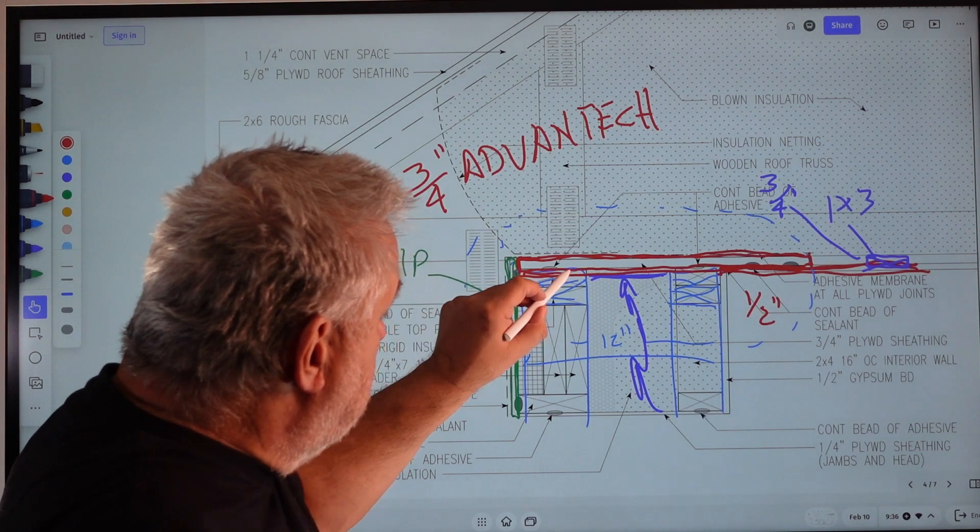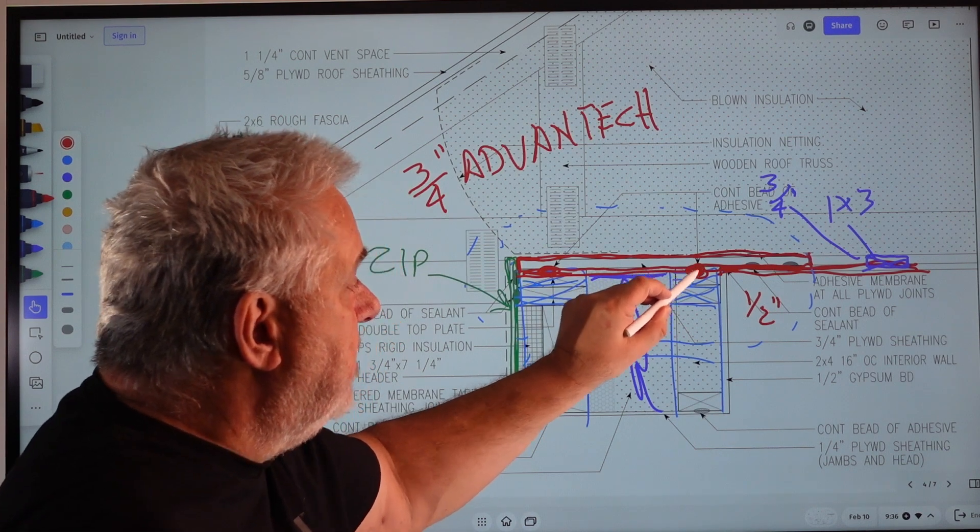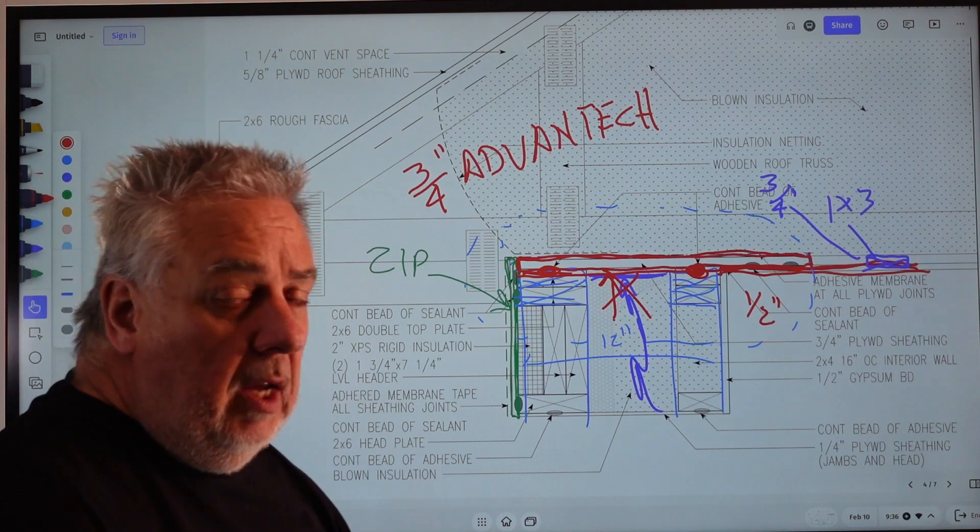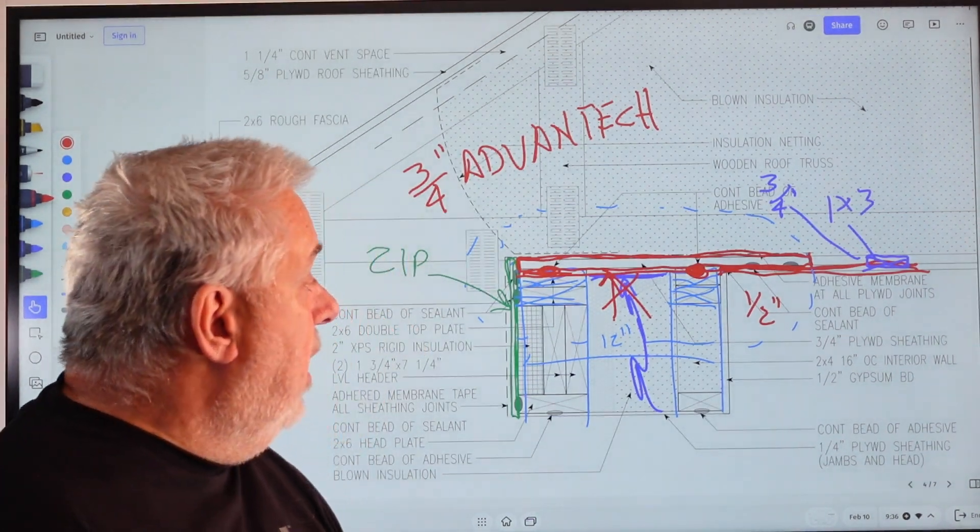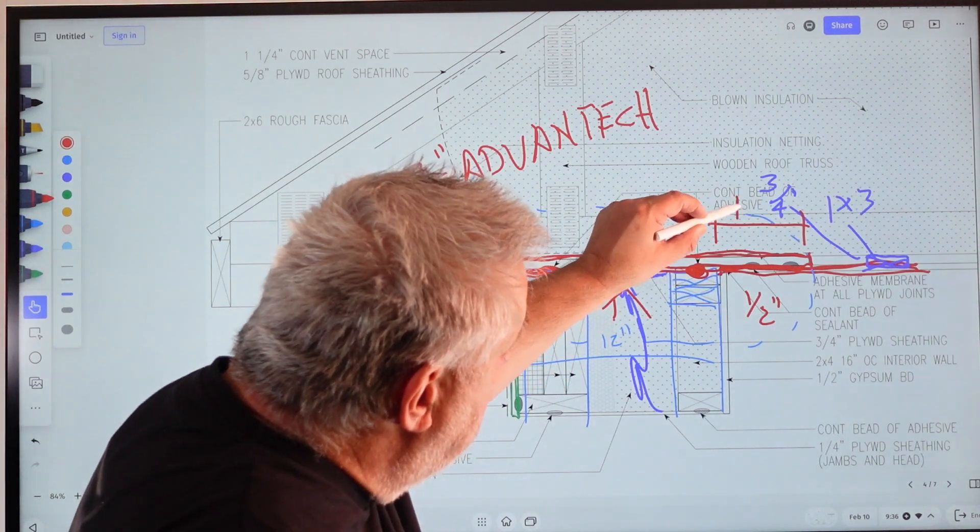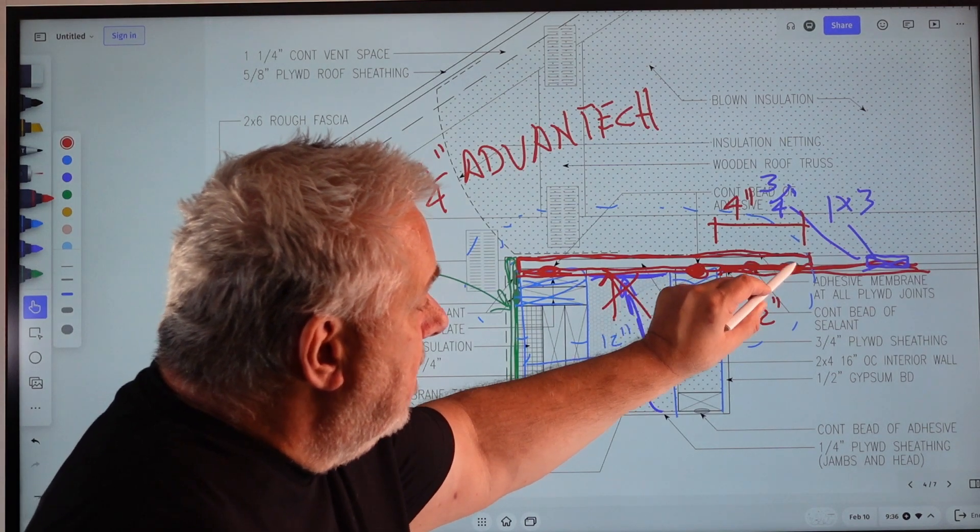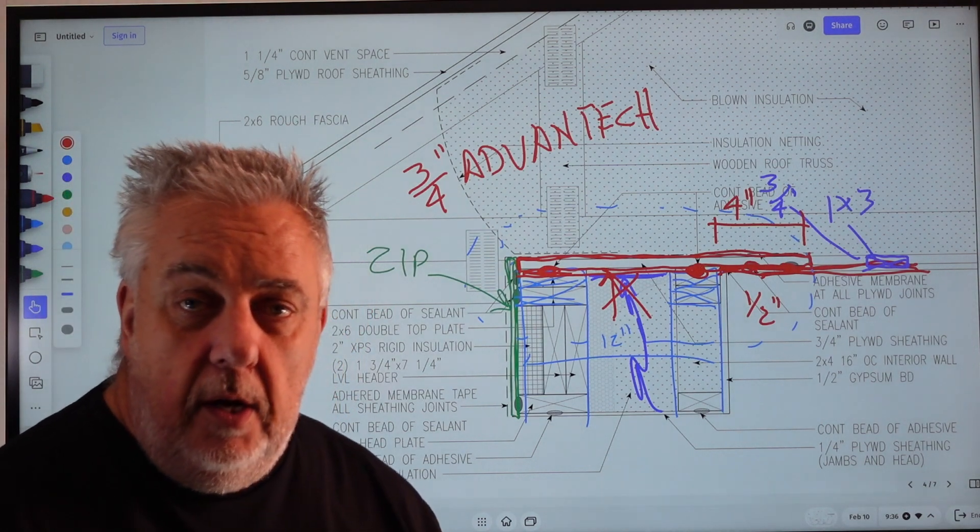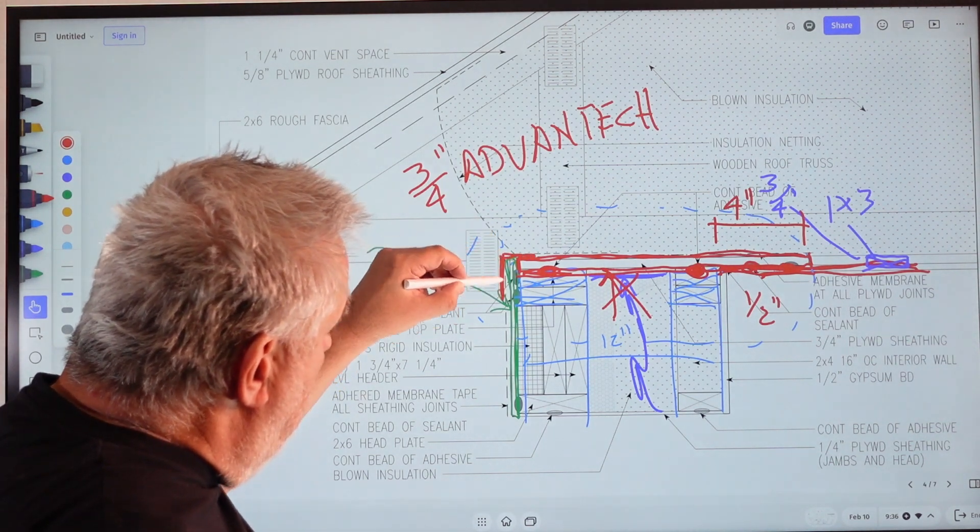So the three quarter inch Advantech, it does a number of things. You can see, it connects the outside wall via a bead of sealant to the inside wall via a bead of sealant. It stops that fire from continuing and provides a code approved closure on that cavity space.